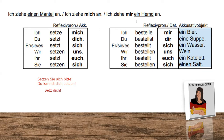Now we have it a little longer because, as I said, we have an Akkusativ object. Therefore we need the Dativ Reflexiv pronouns. The verb here is 'bestellen' — to order. 'Ich bestelle mir ein Bier' — I'm ordering myself a beer. 'Du bestellst dir eine Suppe.' 'Er, sie, es, man bestellt sich ein Wasser.' 'Wir bestellen uns Wein.' 'Ihr bestellt euch ein Kotelett.' 'Sie bestellen sich einen Saft.'